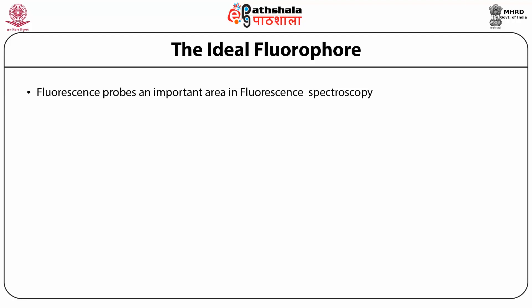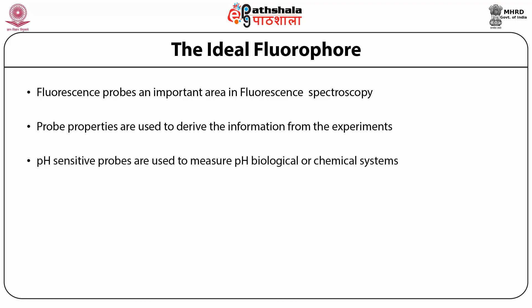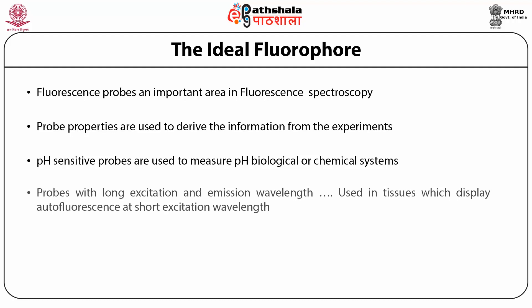Fluorescence probes are an important area in fluorescent spectroscopy. Probe properties are used to derive information from experiments about various biological materials or biological systems. pH-sensitive probes are used to measure pH in biological or chemical systems. Probes with long excitation and emission wavelengths are used in tissues which display autofluorescence at short excitation wavelengths.